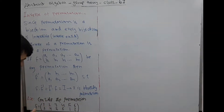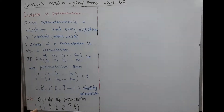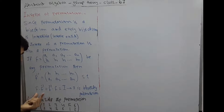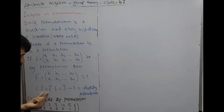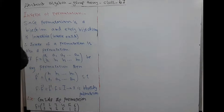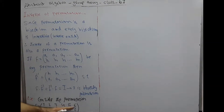Consider the following permutation. We want to find the inverse of this permutation and verify that the relation holds. If F equals (1 2 3 4 5 6 / 3 4 5 6 1 2), we now find the inverse of F.